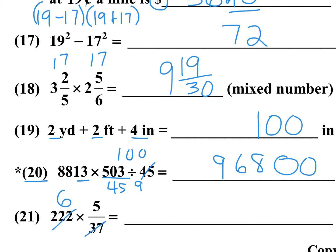Number 21: 37 goes into 222 six times. A quick useful fact: 37 times 3 is 111. So 37 into 222 — that's 2 times 111, which is 2 times 3 times 37. The 37s cancel, leaving 2 times 3 is 6. Then 6 times 5 is 30 for number 21. That's the end of the first column.